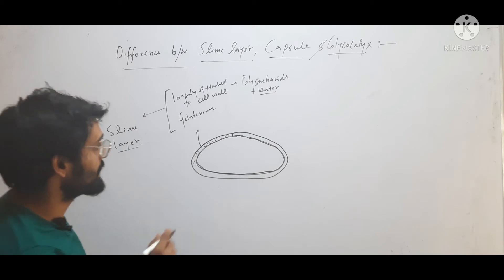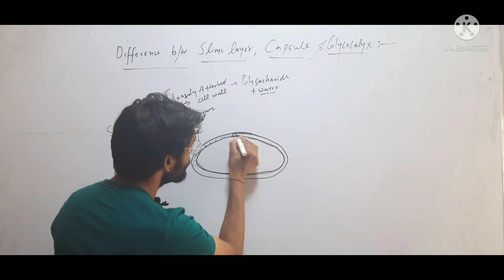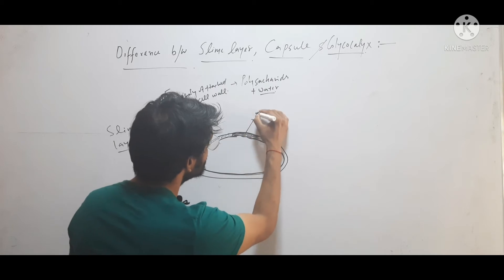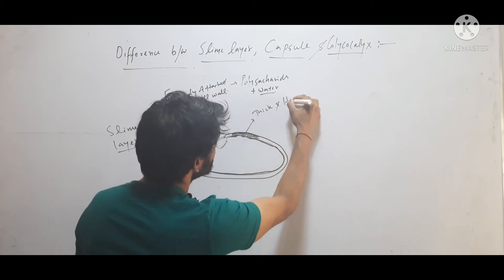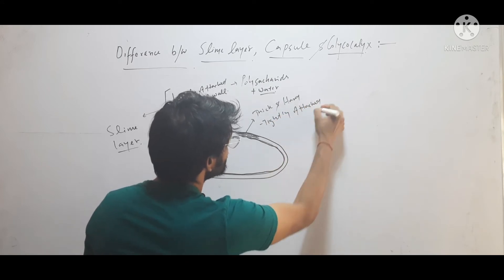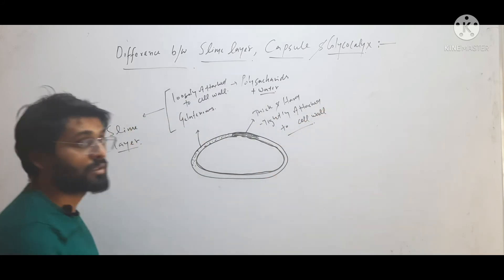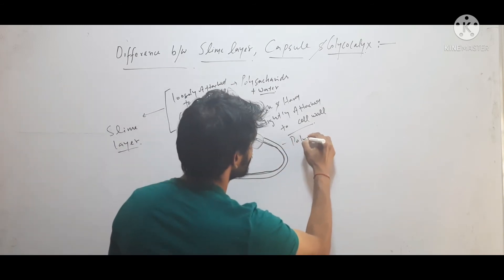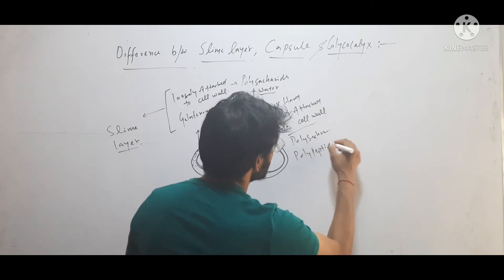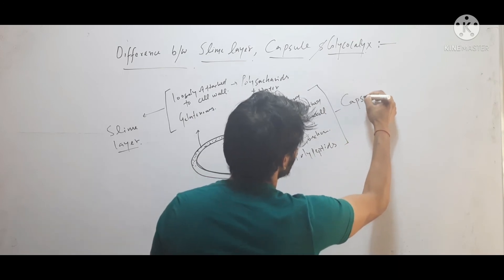But in some bacteria, this outer layer is thick and hard and tightly attached to the cell wall, and made up of polysaccharides and polypeptides. So this thick layer is called capsule.